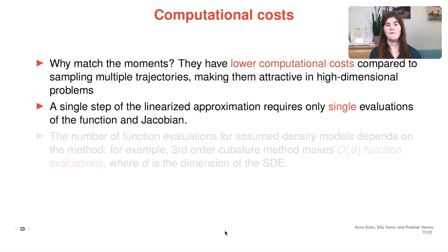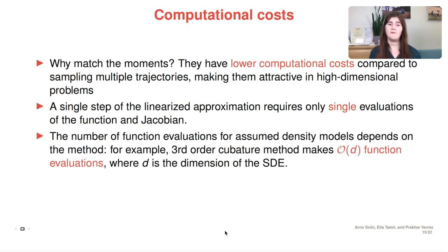Then for example, for linearized approximation, only a single evaluation of the drift and diffusion functions and the Jacobian of the drift are required, so that's quite fast. And then for assumed density models, the computational complexity depends on the method of choice. For example, for third order cubature method, only O(d) function evaluations are required. And you saw third order cubature method in one of the videos in the earlier slides.